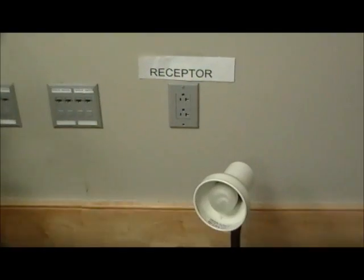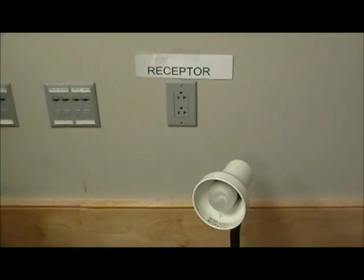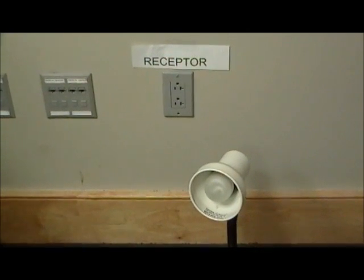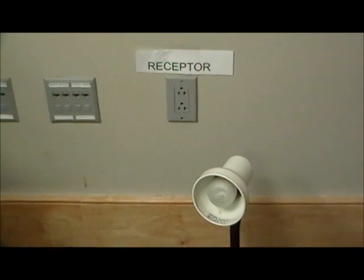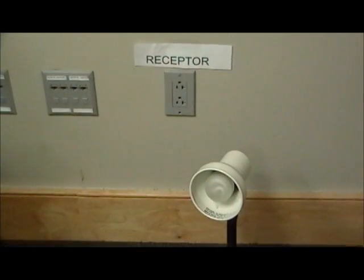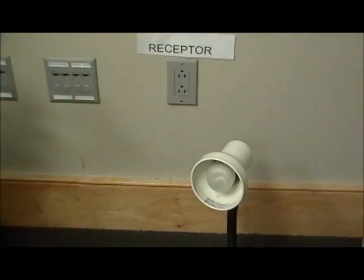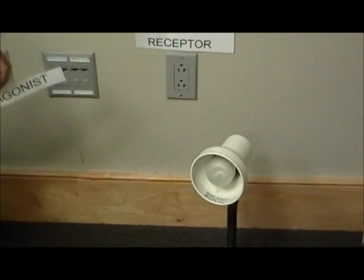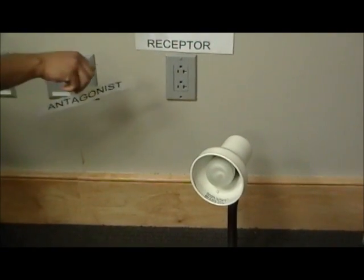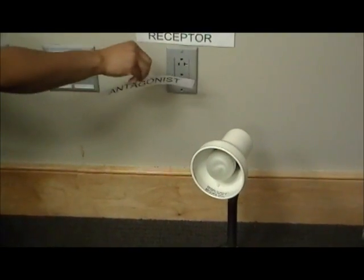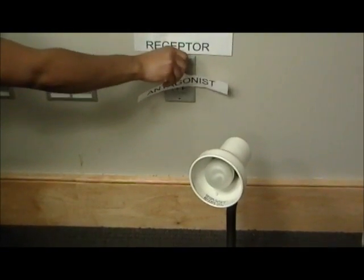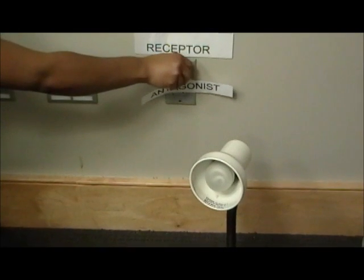Sometimes you may not want the light to turn on, so the receptor needs to be blocked. In this example, the patient will be given an antagonist. An antagonist is a medication that can block normal receptor activity regulated by endogenous compounds.